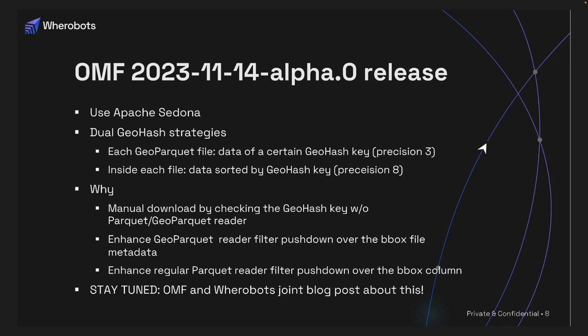In short, the whole point of their data release is to provide GeoParquet format, but also ensure ordinary Parquet readers can read it efficiently, and that ordinary users can manually download the Parquet file part by part by just looking at the GeoHash key. They want to do three things in one GeoParquet release. Please stay tuned — we're going to release a blog post about these techniques very soon.